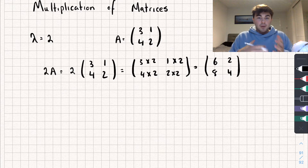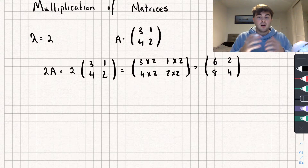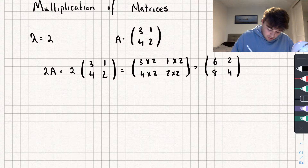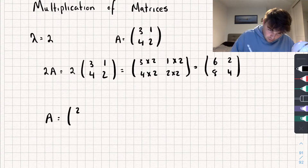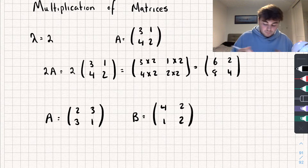So now let's look at multiplying a matrix with another matrix. This only works if the columns of matrix A are equal to the rows of matrix B. So let me write it down because it will make more sense. Say I had matrix A which was equal to [2, 3; 3, 1], and I'm multiplying it by another matrix, say [4, 2; 1, 2]. So we've got two 2 by 2 matrices.